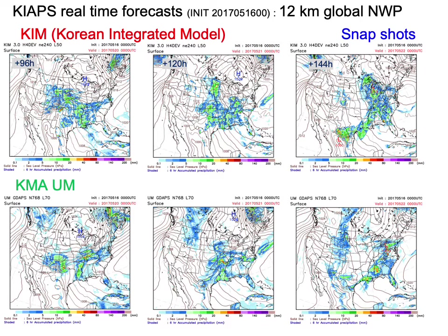This figure shows an example of an NWP application of a numerical model — snapshots at day 4, day 5, and day 6. The upper panel shows the new model KIM, Korea Integrated Model, which became operational in April 2020. The lower panel is the KMA-UM, which was operational from 2010 to 2020. Shading is precipitation and solid lines are sea-level pressure. You can see the similarity in both models over the United States. Both models produce a 10-day forecast and start to deviate after one week.